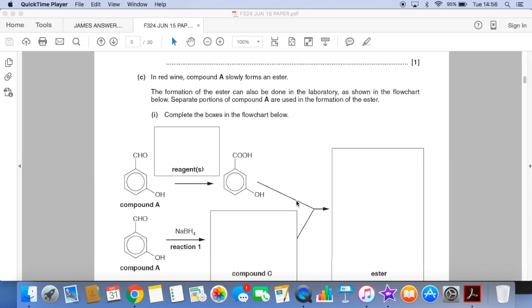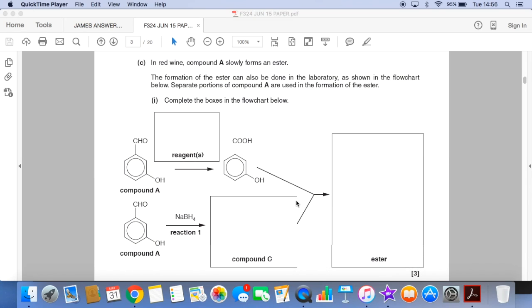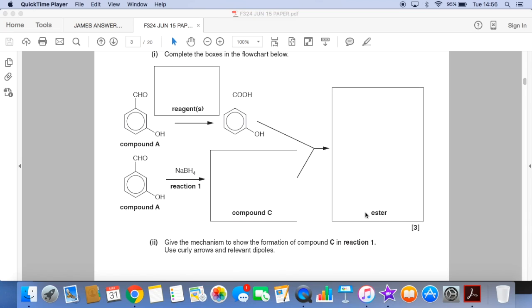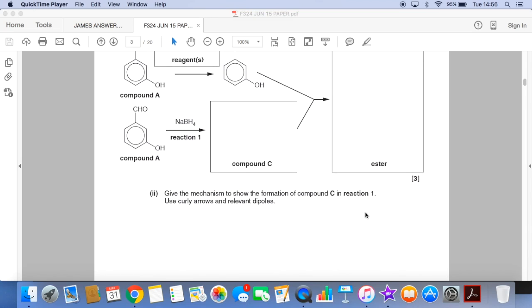Part C moves on to your knowledge of organic reactions. So in red wine compound A slowly forms an ester. So that's going to end up in here and we've got to complete the boxes in the flowchart. Next part of the question,